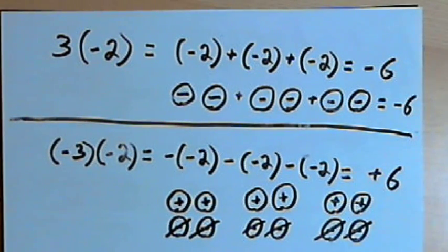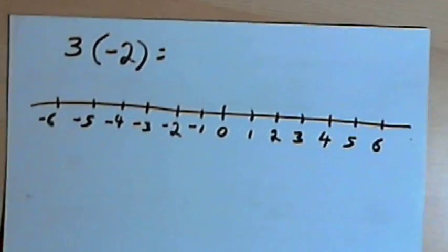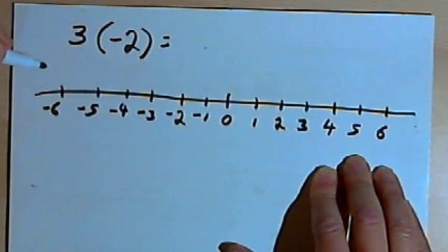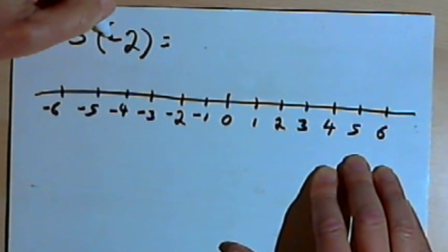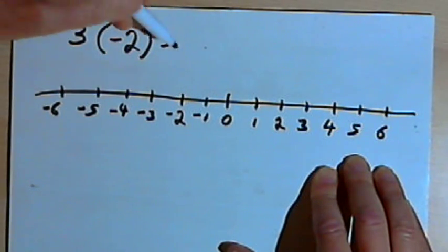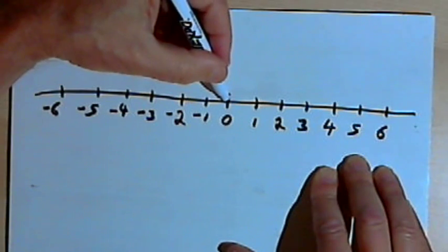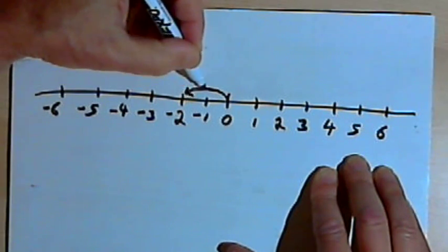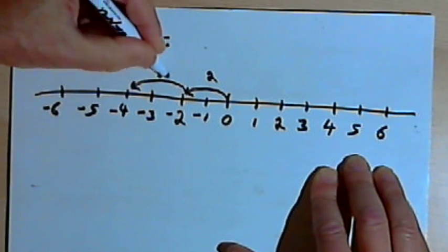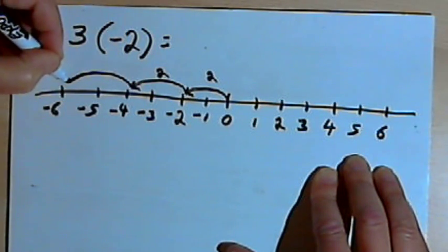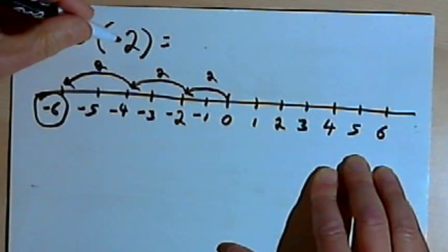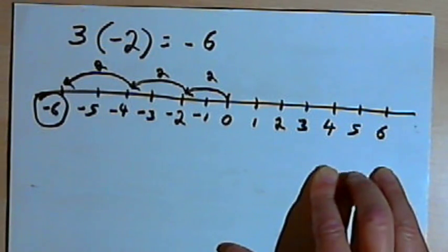Now we can also visualize that with a number line. So let's once again start with 3 times negative 2, and I'm going to do that on a number line. Using repeated addition again, if I start at 0 and I add negative 2 — when I add a negative number, I move to the left. So from 0, I'm going to go two spaces to the left, that gets me to negative 2. Then I want to go two more spaces to the left — that's another negative 2. And two more spaces to the left, and that ultimately gets me to negative 6. So 3 times negative 2 equals negative 6.